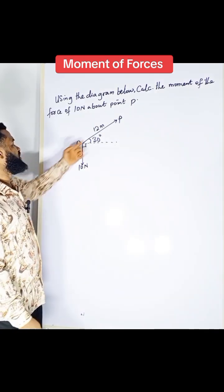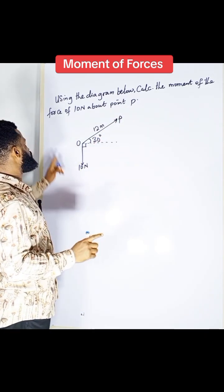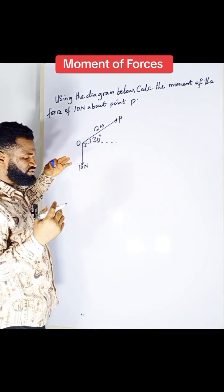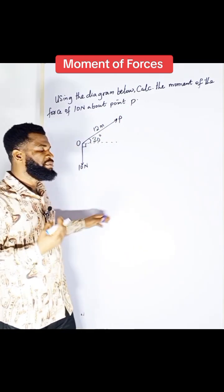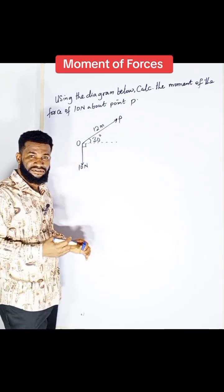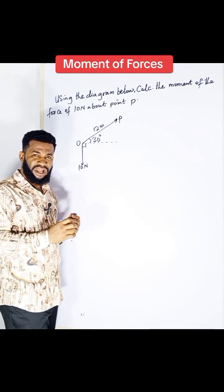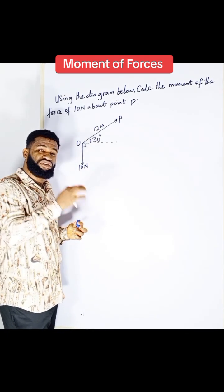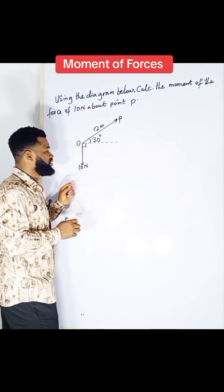Now, what is the moment about this point? So, this is the point of the turning. Again, before you solve this, it's not all about just the formula. It's about the principle of moment. Moment says that the force multiplied by the perpendicular distance from the turning point. Perpendicular distance from the turning point to the line of action.